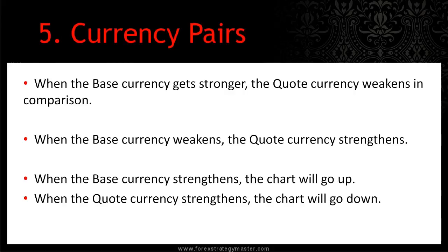When the base currency strengthens, the chart will go up. So when we're looking at this reflected on a chart, we're going to see the chart rise when the base currency strengthens. When the quote currency strengthens, the chart will go down. That is the second currency in the pair — the Euro-USD. The USD will be the quote currency. If this strengthens, it will make the base currency in comparison look weaker, so the chart will go down.